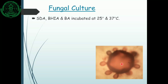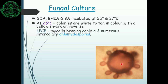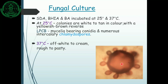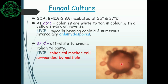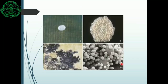This organism can be grown on Sabouraud dextrose agar, brain heart infusion agar, and blood agar. At 25 degrees centigrade, colonies are white to tan in colour with a yellowish-brown reverse side. On LPCB wet mount we can see mycelia, varying conidia, and numerous intercalary chlamydospores. At 37 degrees centigrade, the fungal growth is off-white to cream. The LPCB mount shows spherical mother cells surrounded by multiple daughter cells, giving the pilot's wheel appearance.